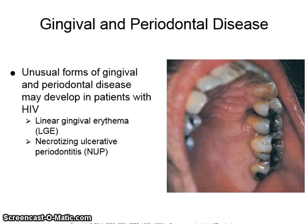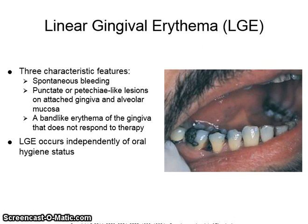Unusual forms of gingival and periodontal disease may develop in patients with HIV, such as linear gingival erythema, or LGE, and necrotizing ulcerative periodontitis, or NUP. LGE has three characteristic features: spontaneous bleeding, punctate or petechiae-like lesions on attached gingiva and alveolar mucosa, and a band-like erythema of the gingiva that does not respond to therapy. LGE occurs independently of oral hygiene status.